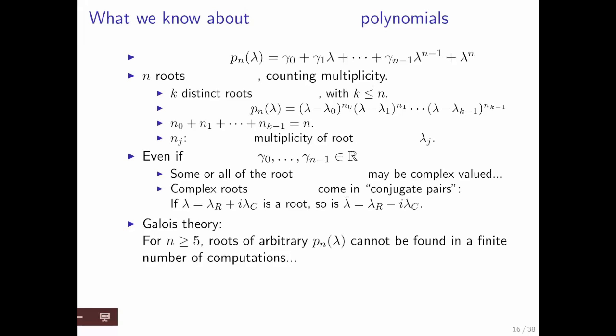Now here is the really annoying thing. There's something called Galois theory, and a consequence of Galois theory is that if you have an arbitrary polynomial of degree n greater than or equal to 5, you cannot compute its roots in a finite number of computations. That doesn't mean that there aren't polynomials of degree 5 or greater for which you can find the roots in a finite number of computations. It just means that there are polynomials for which you cannot.